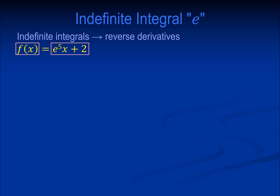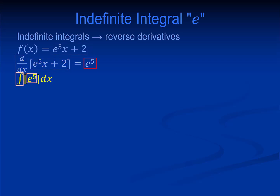We'll use f of x equals e to the fifth x plus 2. The derivative equals e to the fifth. The indefinite integral of e to the fifth results in an answer that is almost identical to the equation before the derivative.